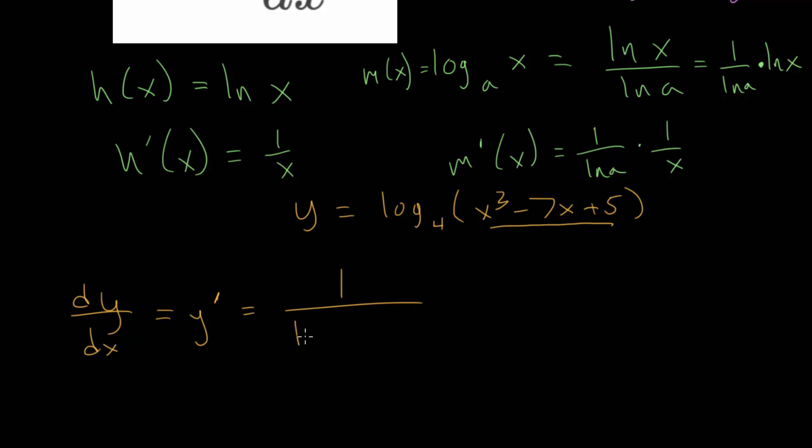And we also have the natural log of the base. Let me rewrite that. ln of 4 multiplied by this input of the logarithm, which is x to the third minus 7x plus 5. And then we need to multiply all of this by the derivative of the inner function.